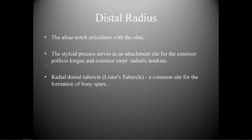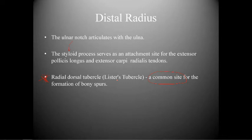At the distal radius, the ulnar notch articulates with the ulna. The styloid process serves as an attachment site for the extensor pollicis longus and extensor carpi radialis tendons. The radial dorsal tubercle, also known as Lister's tubercle, is a common site for formation of bone spurs — this is a clinically important fact to remember.